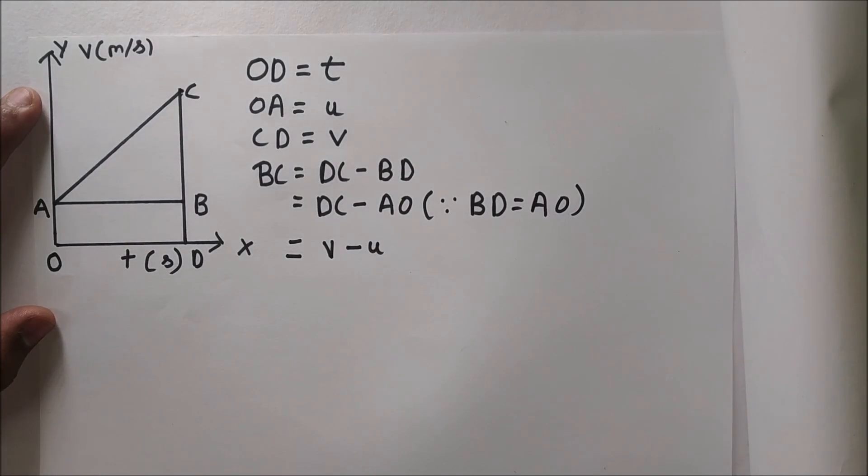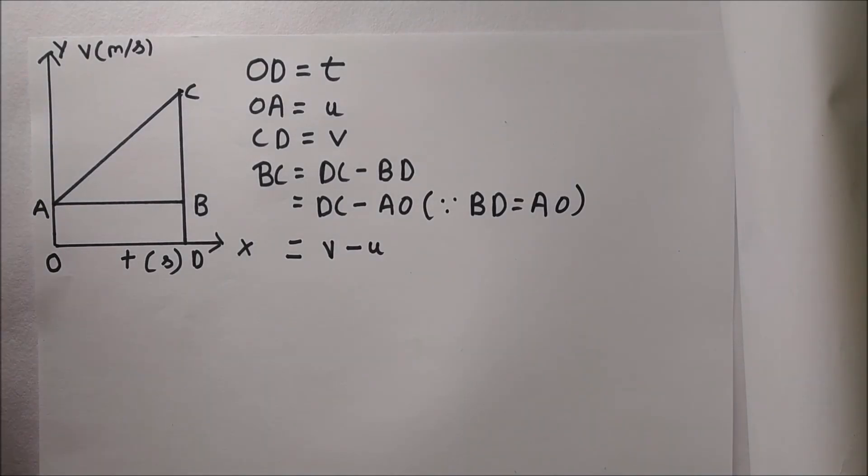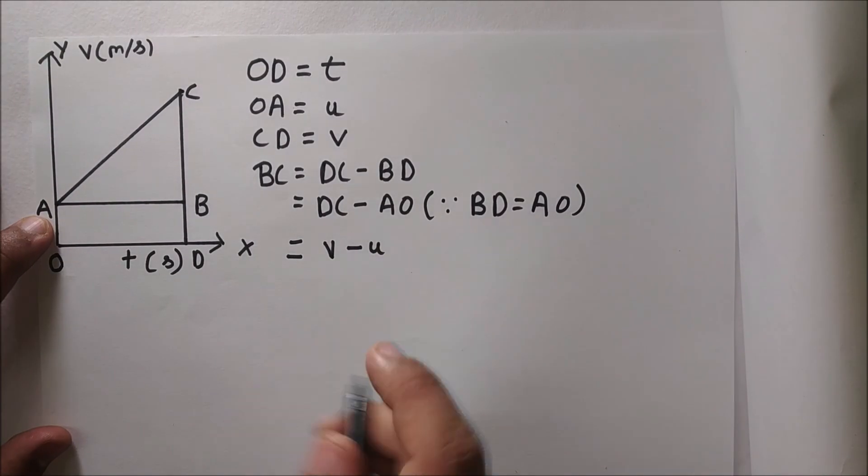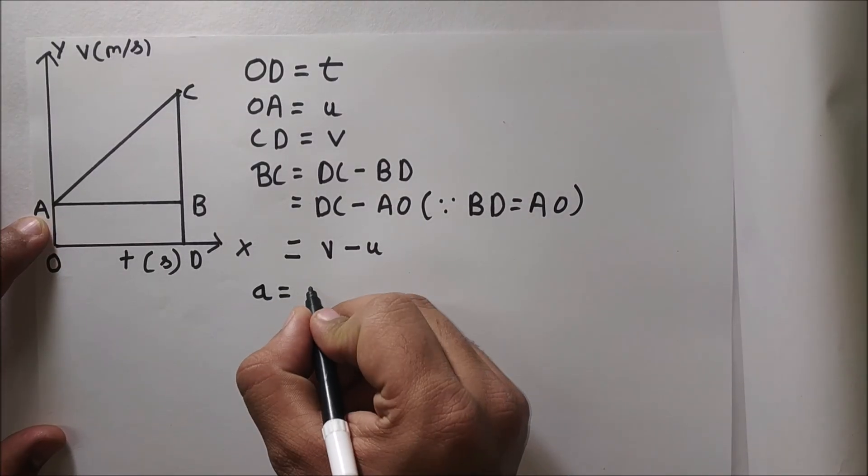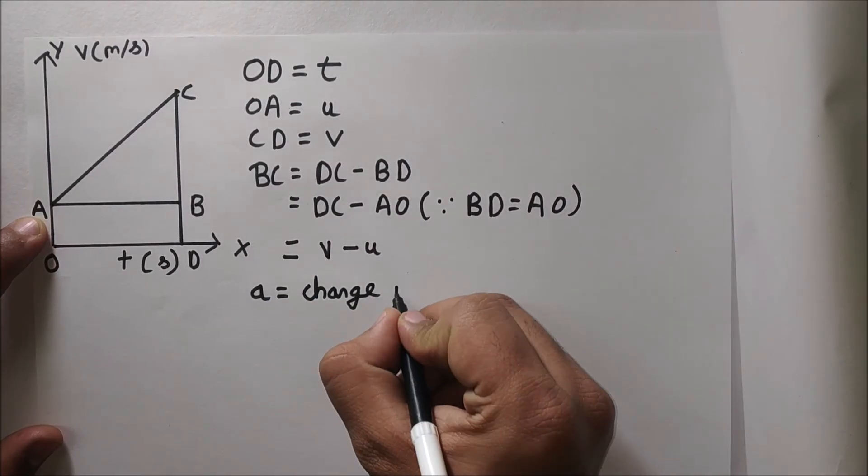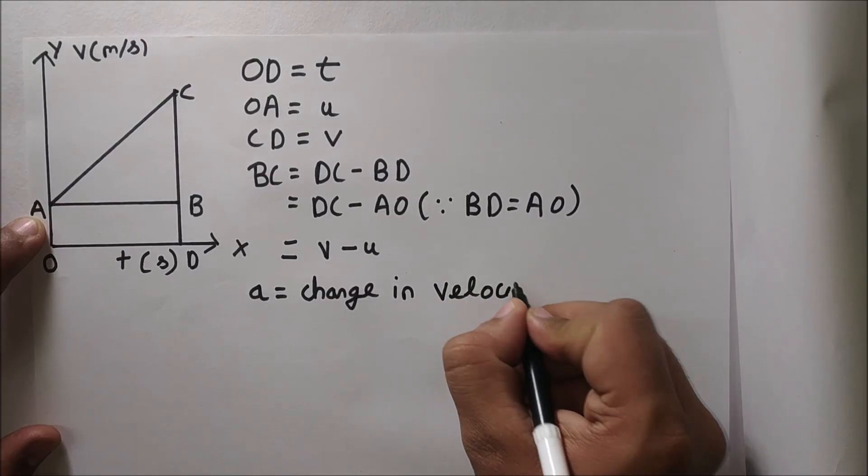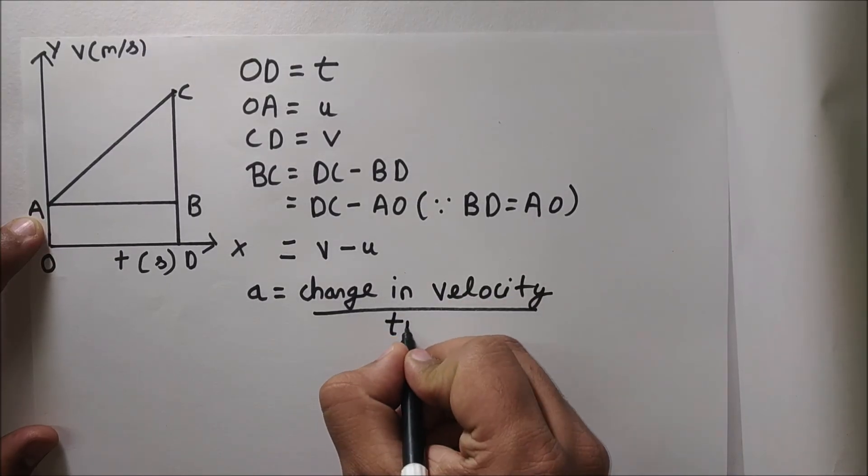Let us derive the first equation of motion. We know that acceleration is change in velocity upon time. So change in velocity will be BC, that's v minus u, upon OD. Actually AB, but AB and OD are equal, so that's time.